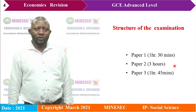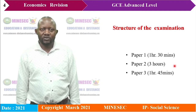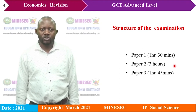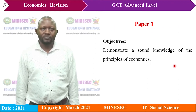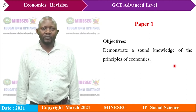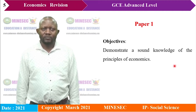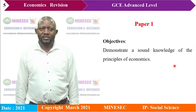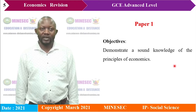Let's look at the structure of the exam. Advanced Level Economics is divided into three papers: Papers 1, 2, and 3. Paper 1's main objective is to demonstrate a sound knowledge of the principles of economics. Paper 1 carries 30% of the total marks and is made up of 50 MCQ questions.